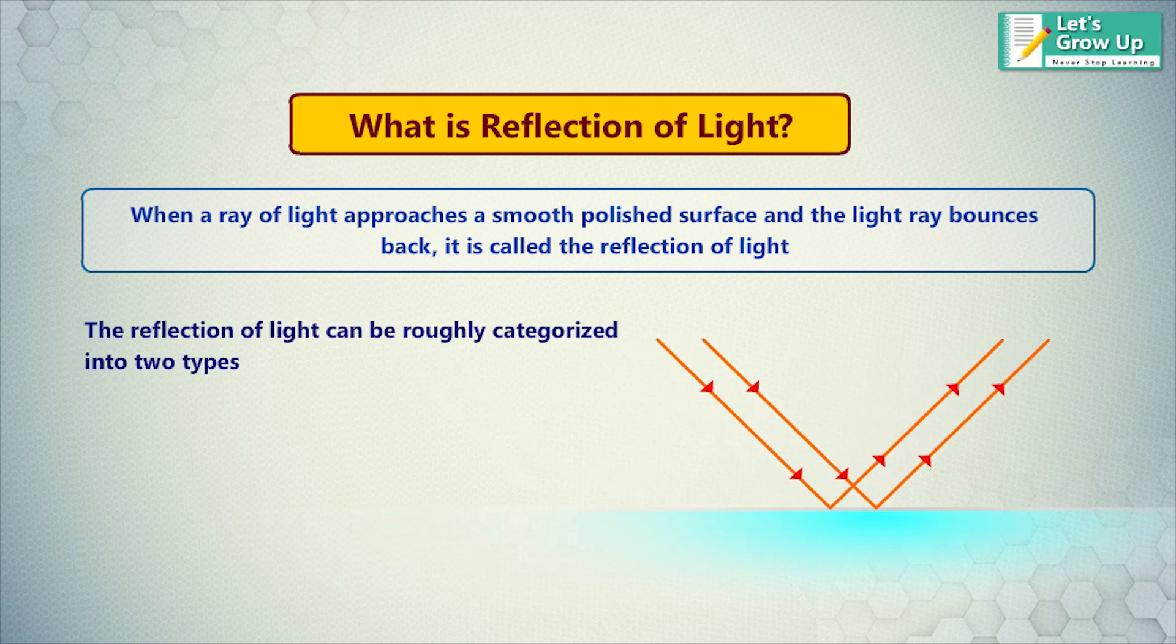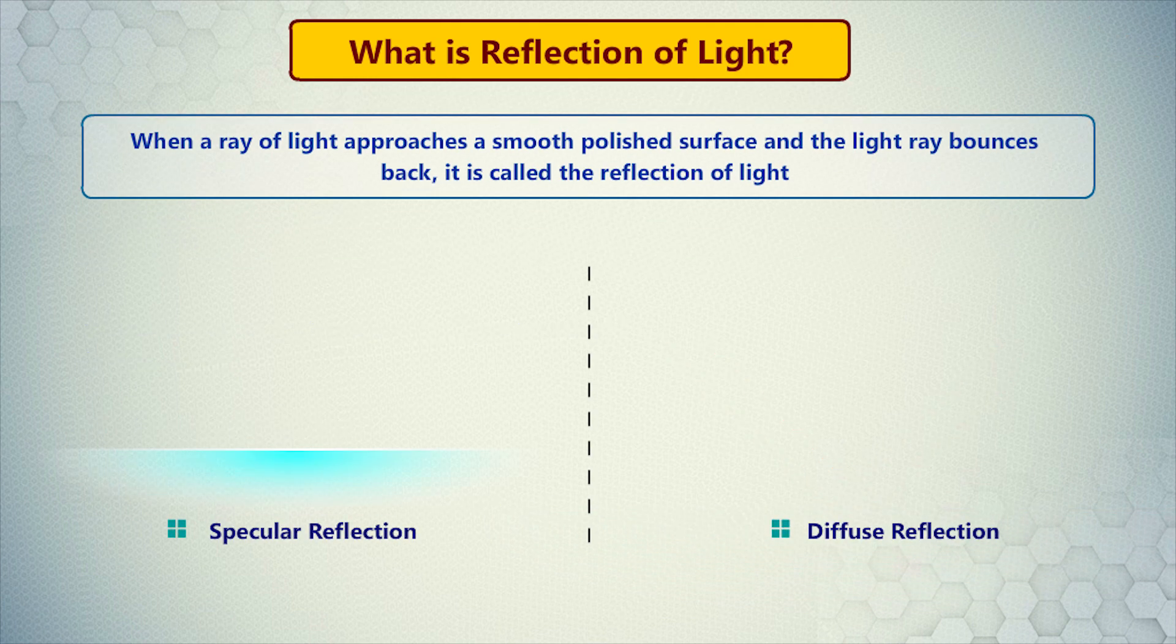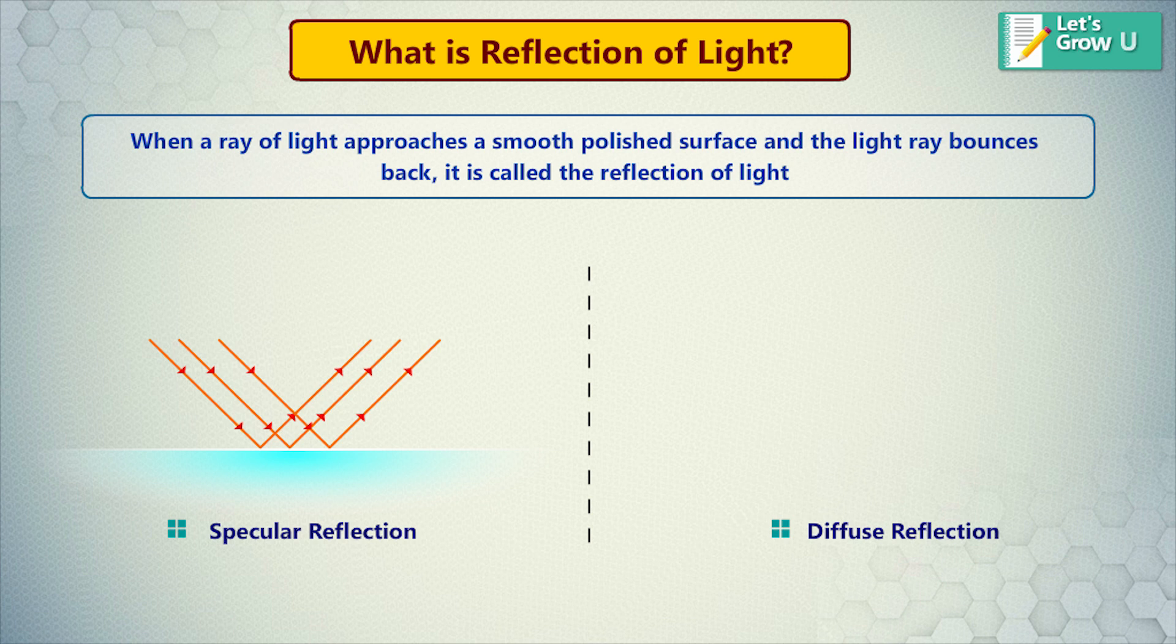The reflection of light can be categorized into two types, specular reflection and diffuse reflection. When light reflects from a smooth surface at the same angle as it hits the surface, this is called specular reflection. For a smooth surface, reflected light rays travel in the same direction.